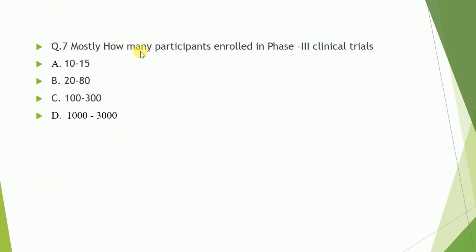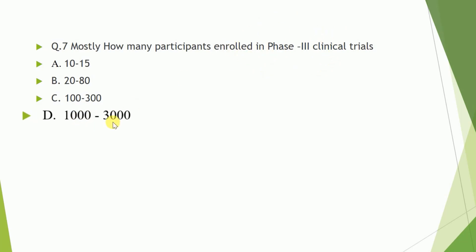Question number seven: mostly how many participants enroll in phase three trial? Phase three trials are bigger trials, so almost 1000 to 3000 people are participating in these trials.